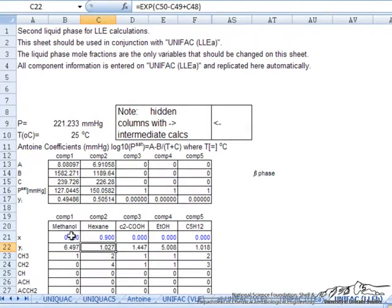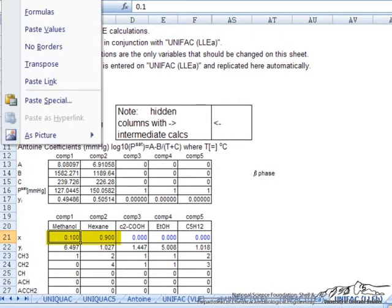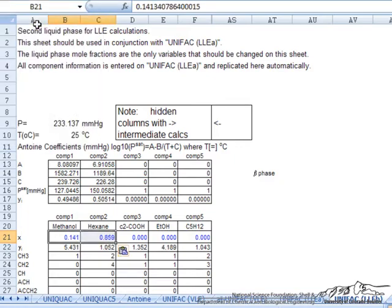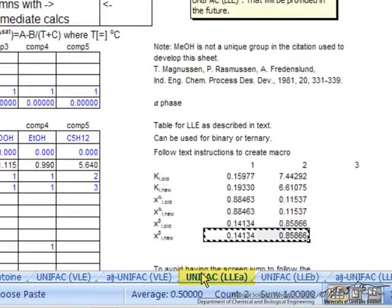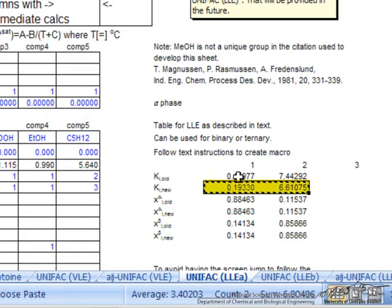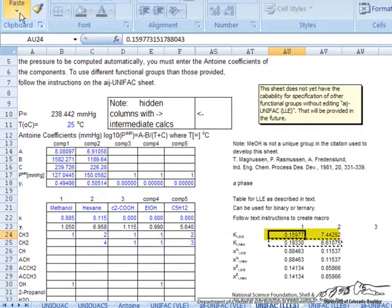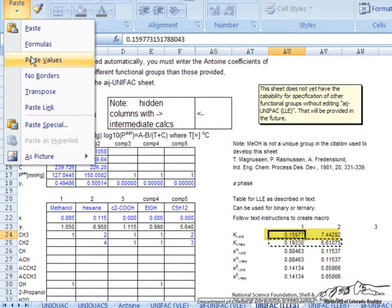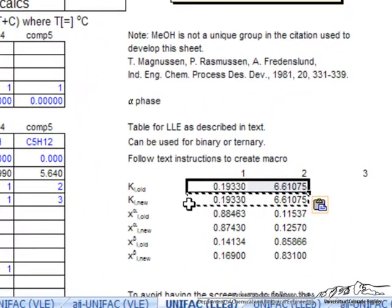We do the same thing with the new values for the beta phase and that requires that we go over to this other sheet and again be sure to paste the values. And then we return here and the last thing we need to do to complete our iteration is copy the ki new and paste that special, paste values into the ki old.